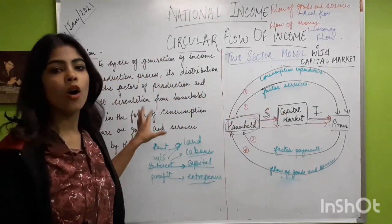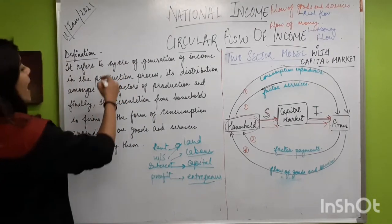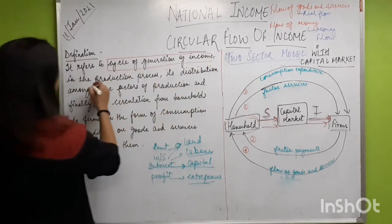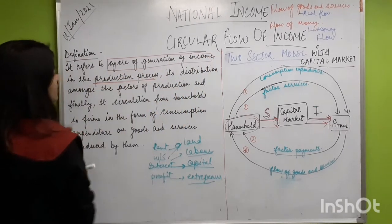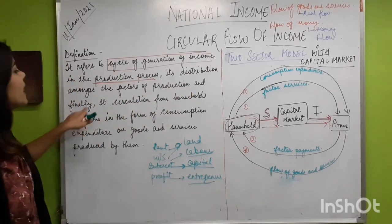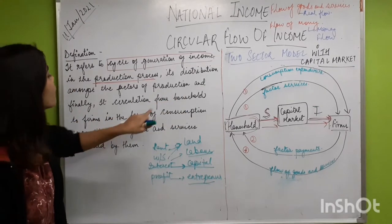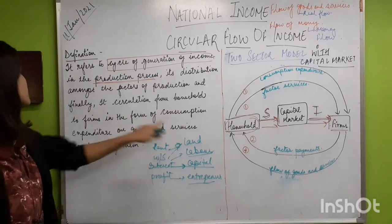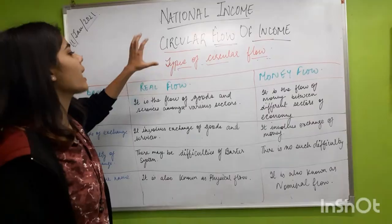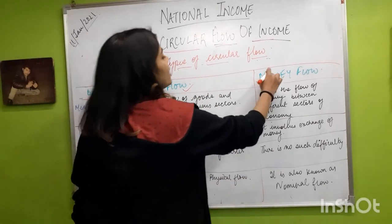The circular flow of income refers to the cycle of generation of income in the production process, its distribution among the factors of production, and finally its circulation from households to firms in the form of consumption expenditure on goods and services produced by them. There are two types of circular flow: real flow and money flow.